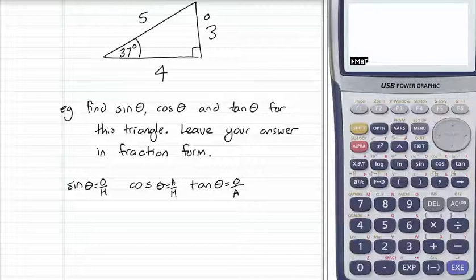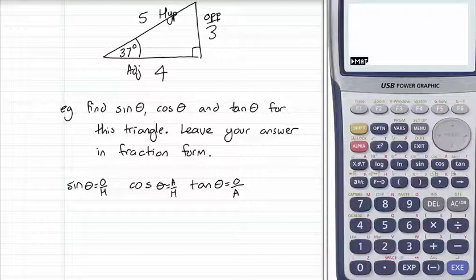And the short side that's touching the angle is the adjacent. So, opposite, adjacent, and hypotenuse. All we have to do for each ratio, they're just asking us for sine theta. The sine of the angle is opposite over hypotenuse.